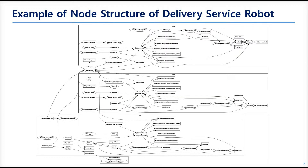While all the nodes for the delivery service run at the same time, the RQT graph will show this kind of map — I guess you've never seen this kind of big node network before. As you can see, there are three groups of nodes connected to the service core. Each group is running the same nodes, but they are grouped with a namespace so the nodes can avoid being terminated. Each pair of the tablet and the robot are grouped with the same namespace, so it is easy to manage.